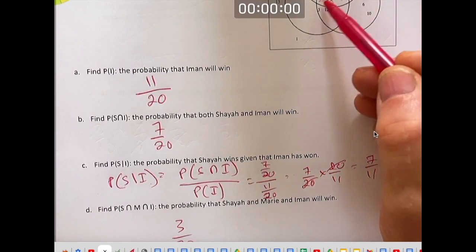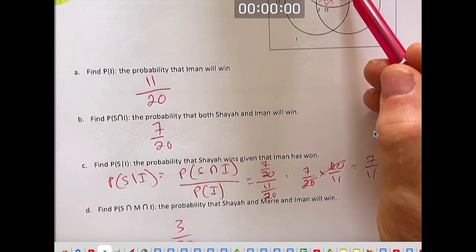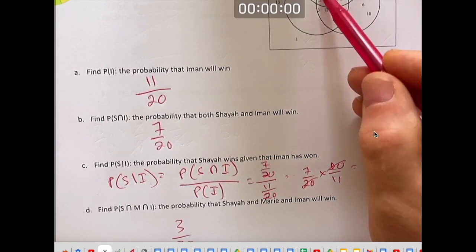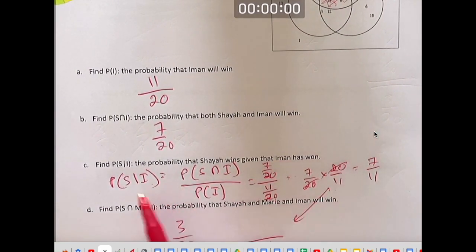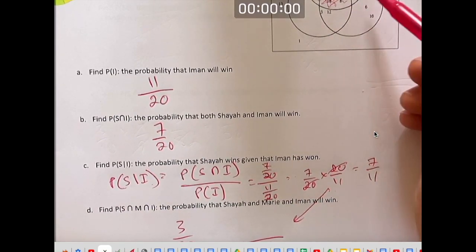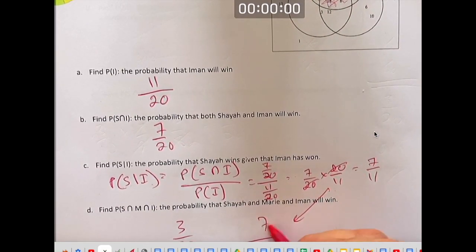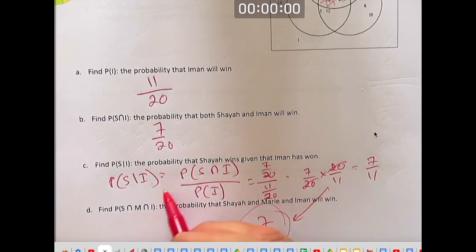For I, how many people are in I? There are 11 people in here. Like 1, 2, 3, 4, 5, 6, 7, 8, 9, 10, 11. 11 in I. How many are in S that are also in I? There are 1, 2, 3, 4, 5, 6, 7. 7 out of 11. You can do this logically or you can use the formula. Same answer.